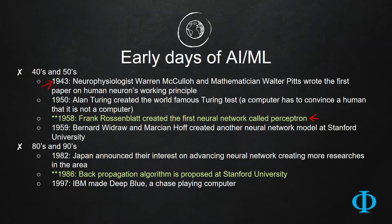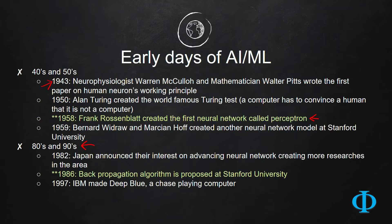After these discoveries, the field of machine learning got suppressed for several decades for many different reasons. Then the field again started surging in the decade of the 80s and 90s, when Japan announced their interest in advancing neural networks and creating more research in this area. A major breakthrough in this time frame was in 1986, when the back-propagation algorithm was proposed at Stanford University.